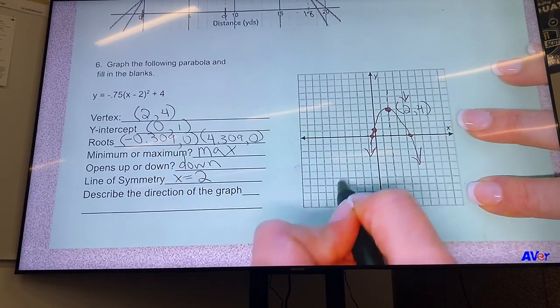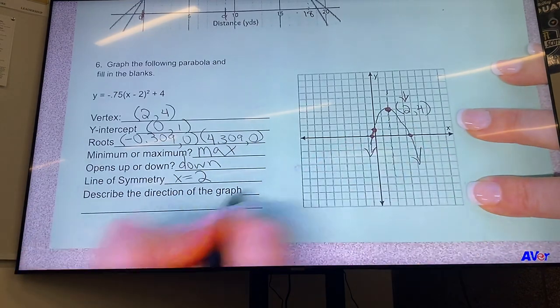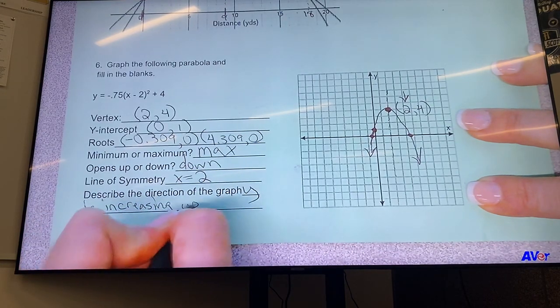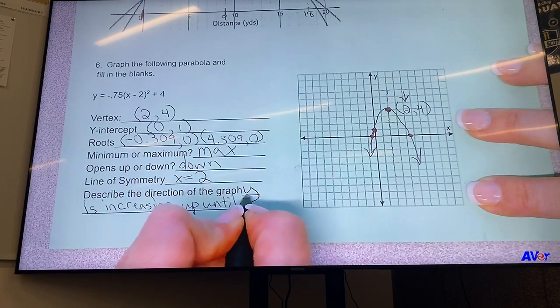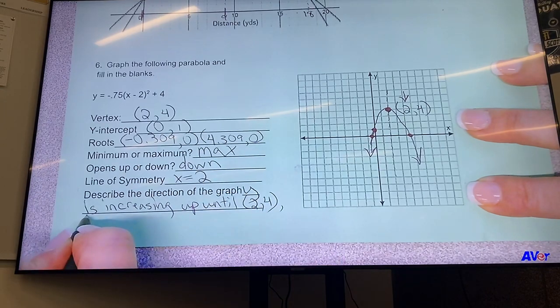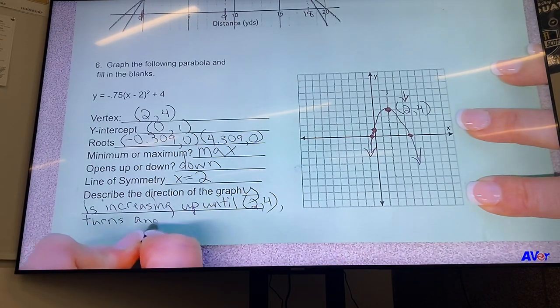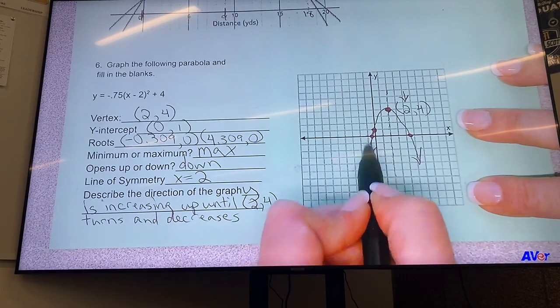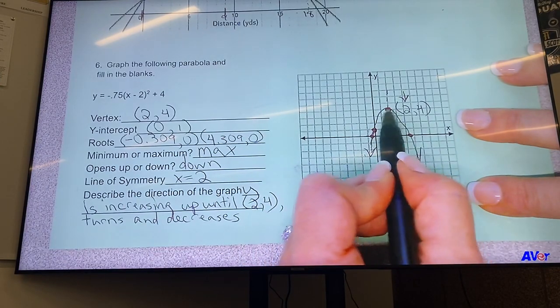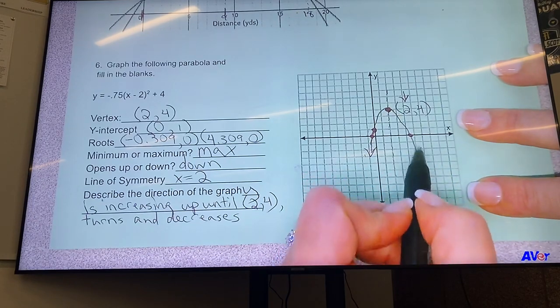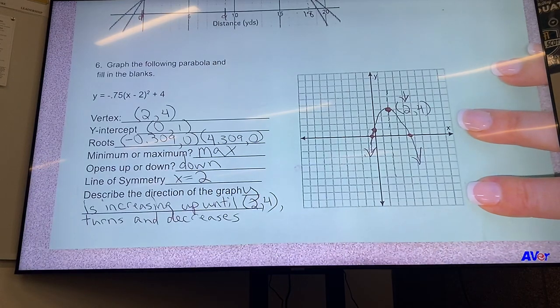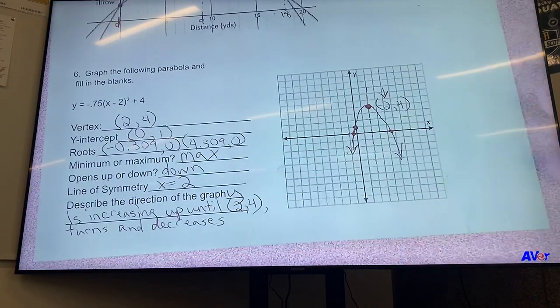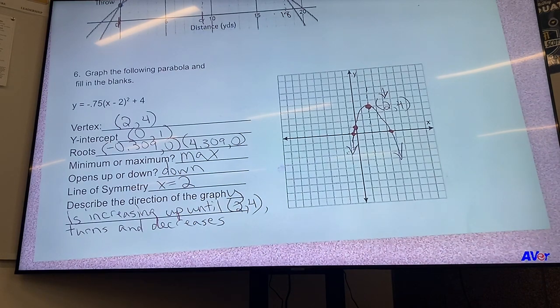What's happening is the y values are increasing - y is increasing until (2, 4), then it turns and decreases. So you can say this a few different ways. Basically we're saying y is getting bigger and bigger, y is going up, and then at the vertex it kind of stops or it makes a turn, and then y is decreasing. That's what we're talking about with the direction of the graph. You could say from left to right, the y values are increasing, then reach the vertex, then decrease. Something like that. All right, I hope that was helpful to get you ready for test number eight.